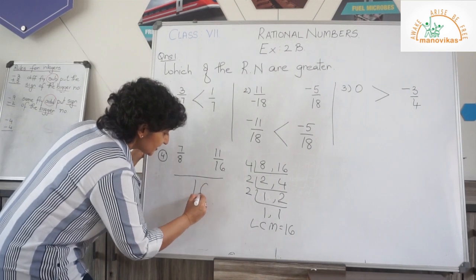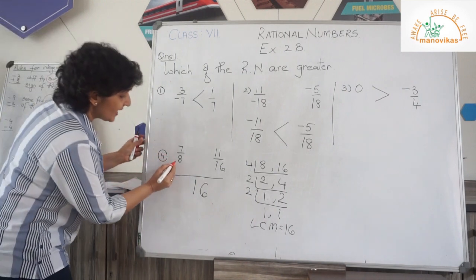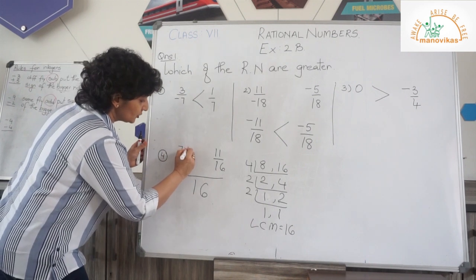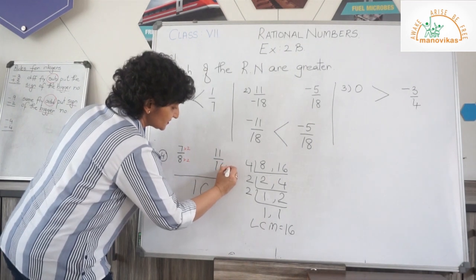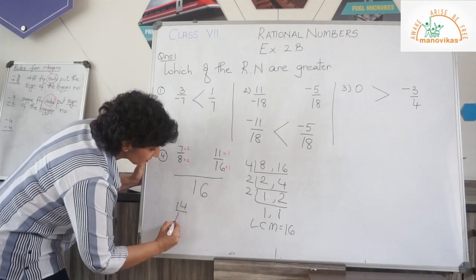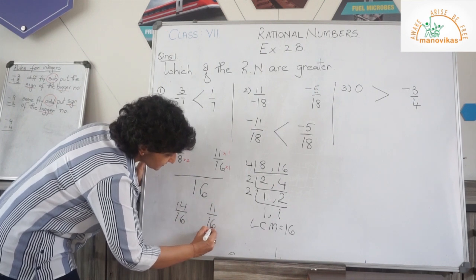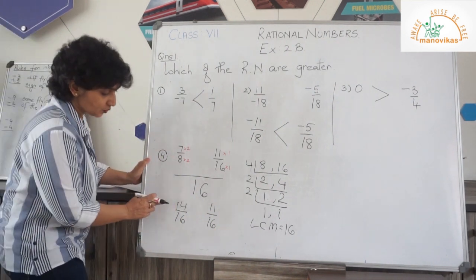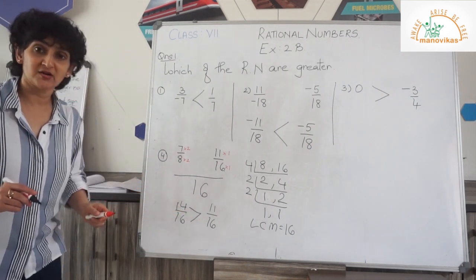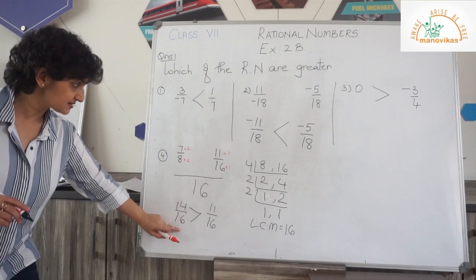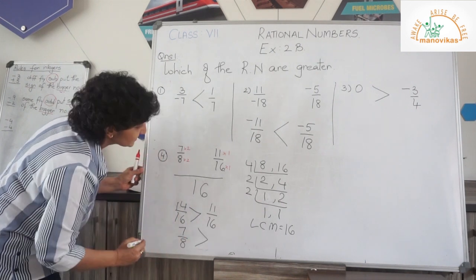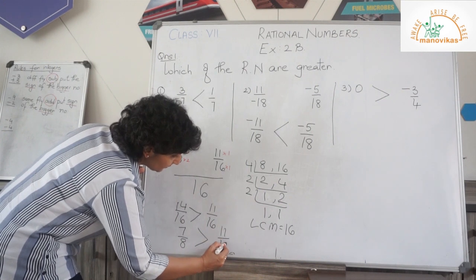So I take 16 here. Now, 8 goes how many times in 16? I get 2 times. So I multiply here, I need to multiply with the same number. 16 goes 1 time. So let's rewrite: I get 14 upon 16 and I get 11 upon 16. My denominators are the same, so I know 14 is greater than 11. So 14 upon 16 is greater than 11 upon 16. I cannot end with this — I need to find my original rational number. So I know 7 upon 8 is greater than 11 upon 16.